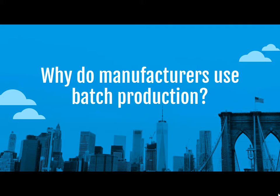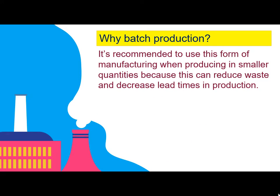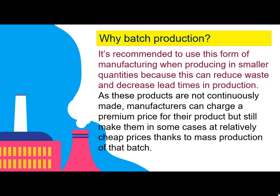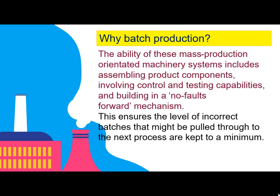Why do manufacturers use batch production? It is recommended to use this form of manufacturing when producing in smaller quantities because it can reduce waste and decrease lead times in production. As these products are not continuously made, manufacturers can charge a premium price but still make them at relatively cheap prices thanks to mass production of that batch. The machinery systems include assembling product components, control and testing capabilities, and a no-fault-forward mechanism, ensuring that incorrect batches pulled through to the next process are kept to a minimum.